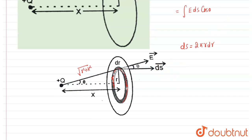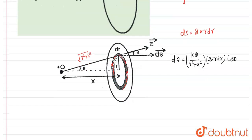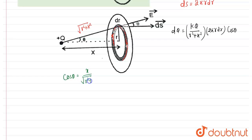So the flux contribution from that element, dφ, is equal to E vector which is KQ upon (r² + x²), multiplied by ds which is 2πr dr, and multiplied by cosθ. To find the total flux we integrate that relation. From the diagram, cosθ equals x upon √(r² + x²).